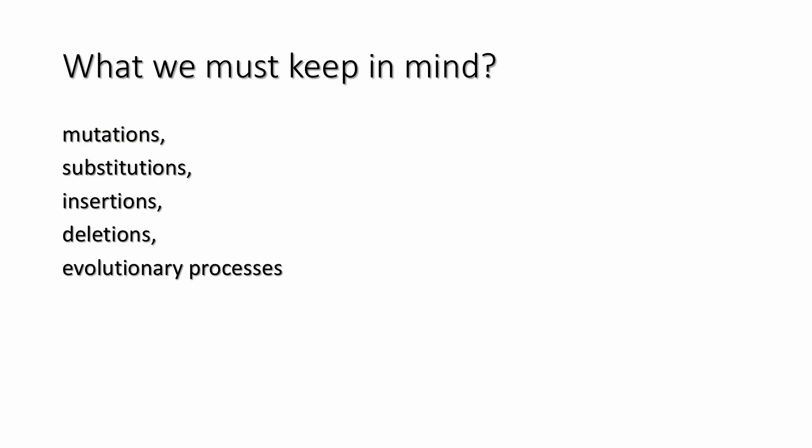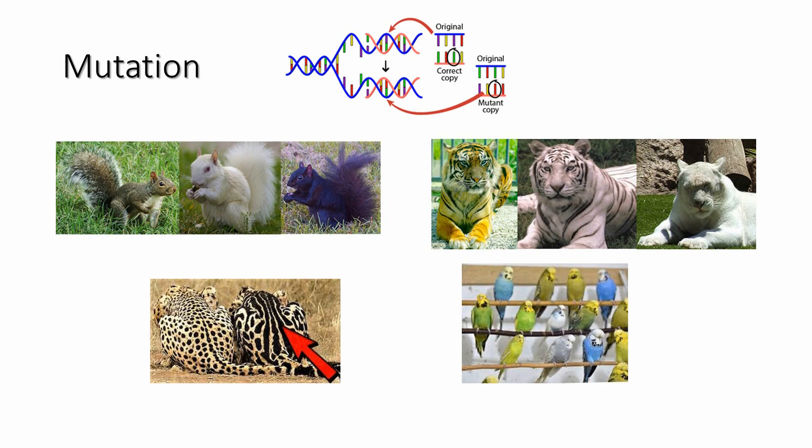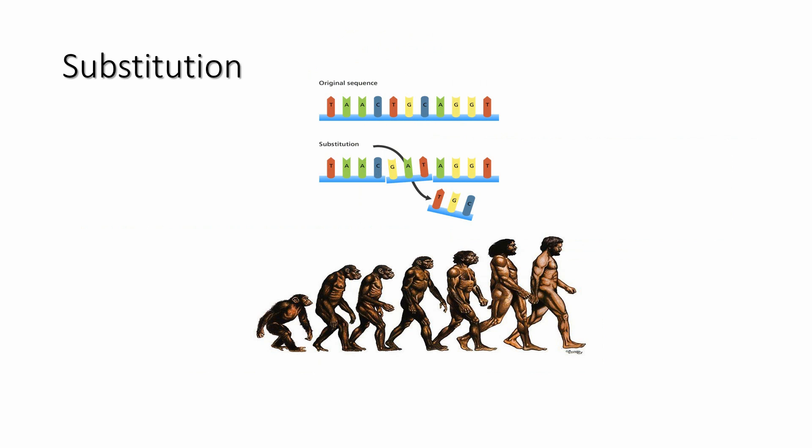We must keep in mind that gene and protein sequences do not remain the same over millions of years. They are subject to mutations, substitutions, insertions, deletions, and evolutionary processes. First we need to understand the difference between mutation and substitution. A mutation is a base change such that the mutant and wild type forms coexist in a population. Substitutions are new mutations which accumulate in an evolving lineage over time, which depends on both mutation rate and the effect of natural selection. For example, homo habilis and homo erectus were substituted by more fit and powerful homo sapiens.